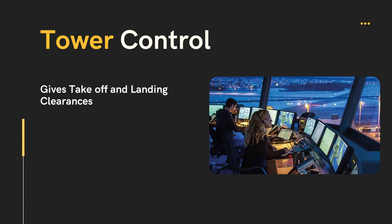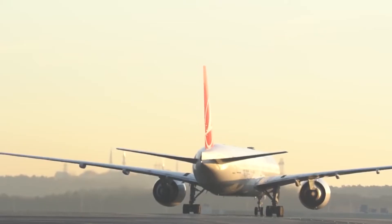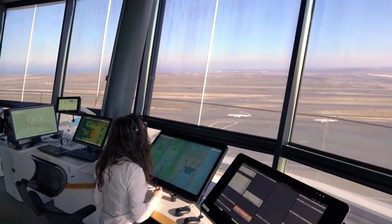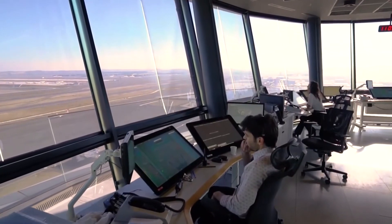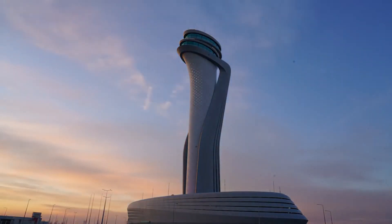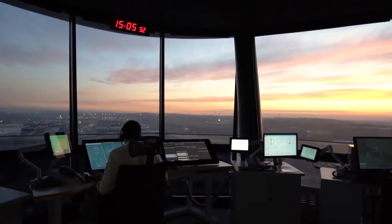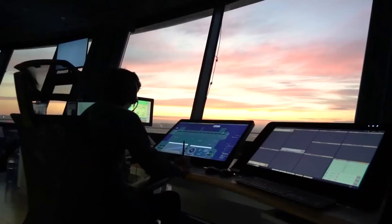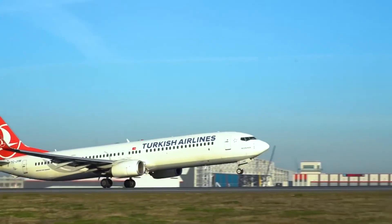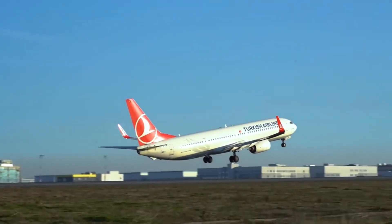Ground controllers also give required taxi routes until the holding point for the runway from which the aircraft will take off. Another unit is tower. While the aircraft is approaching the holding point, the tower controller takes over control from the ground controller. Tower controller is generally responsible for traffic departing from the runway or approaching the runway.